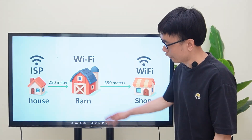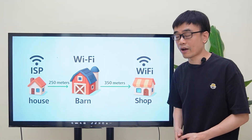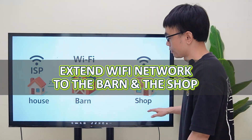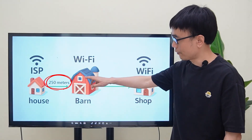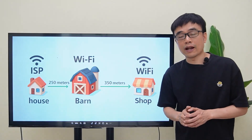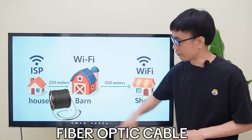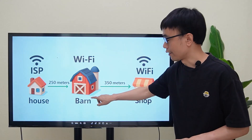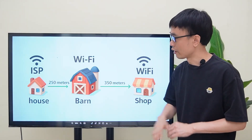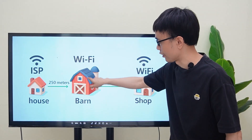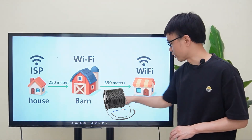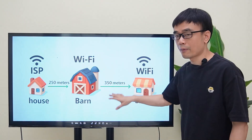The client has internet access in his house from the ISP provider. He wanted to extend the network to the barn and the shop. It is 250 meters between the house and the barn. His original plan is to pull a fiber optic cable from the house to the barn, then set up a network device in the barn, such as a Wi-Fi access point to provide Wi-Fi coverage in that area, then put another fiber optic cable from the barn to the shop.